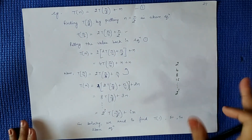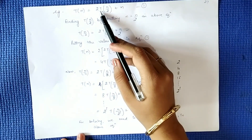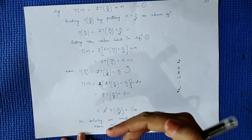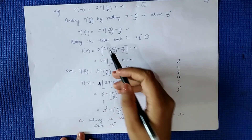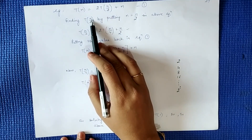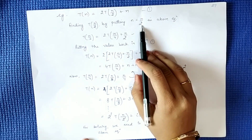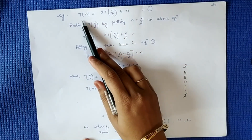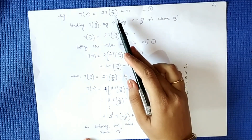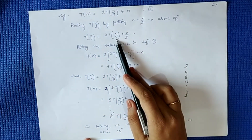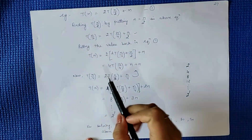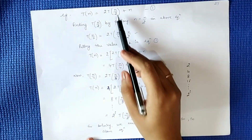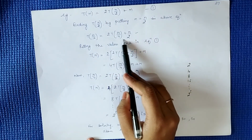Let's move to the last example, which is similar to what we solved in the substitution method: T(n) = 2T(n/2) + n. We will now solve this using the iteration method to see if we get the same complexity. First, finding the value of T(n/2) by putting N = n/2 in the equation: T(n/2) = 2T(n/4) + n/2.